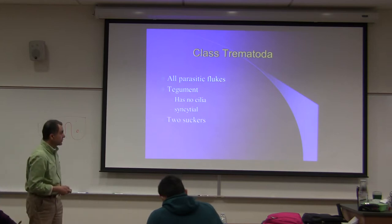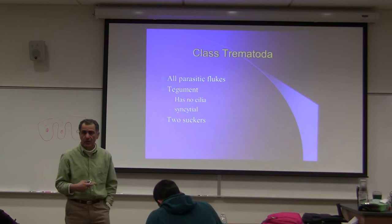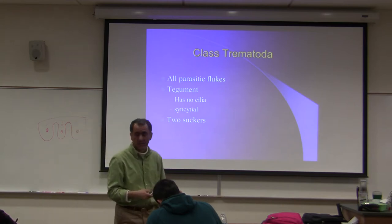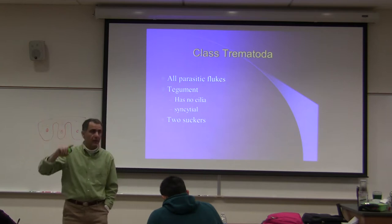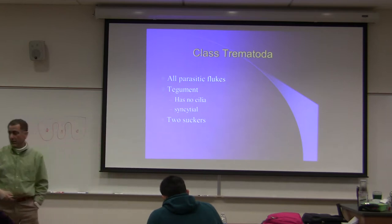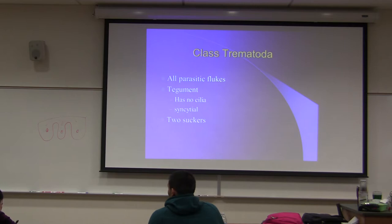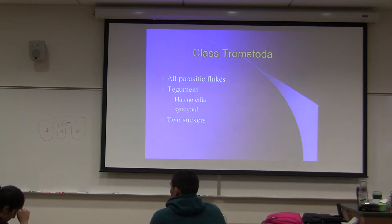They have two suckers - an oral sucker and a ventral sucker. On your slides with the real animals, and we have some models, you should be able to identify the oral sucker and ventral sucker. This is an example of Clonorchis sinensis; there are other species, but we have a model of Clonorchis sinensis.